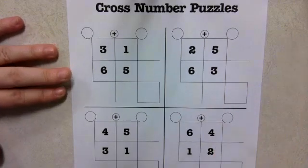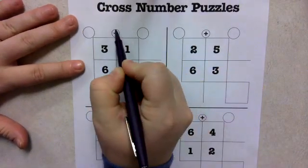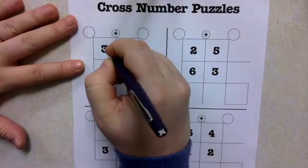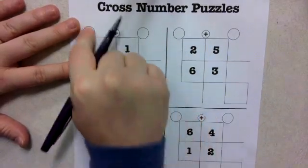With a cross number puzzle, what students are doing is looking at the operation. These say to add, and students are going to add vertically, horizontally, and diagonally.